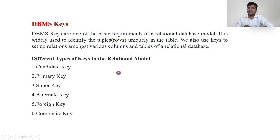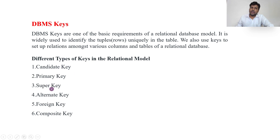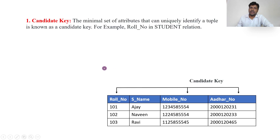So your roll number is a key. There are different types of keys. The first is candidate key, second is primary key, third is super key, fourth is alternative key, fifth is foreign key, and sixth is composite key. These are the major keys. Let us see them one by one.